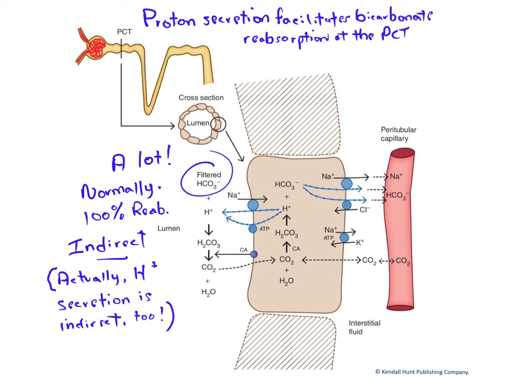The sodium proton countertransporter is secondary active transport. It brings one sodium into the cell for every proton that comes out. This needs the electrochemical gradient that's set up by primary active transport, the sodium-potassium pump on the basolateral membrane.